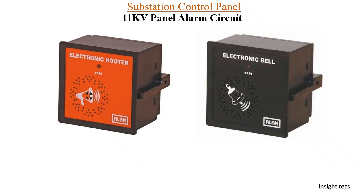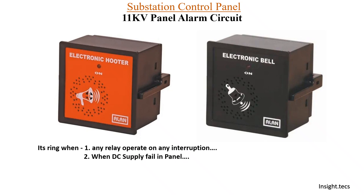This kind of electronic hooter is available right now in the panel. So this is an electronic hooter — or you can call it an electronic bell. It rings when any relay operates on any interruption; basically in case of any tripping, this will be operated. Second, when there is a DC supply fail in the panel, again you will hear this. And when there is AC supply fail in the panel, you can hear this electronic hooter.